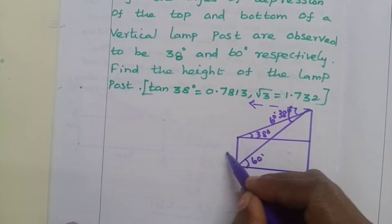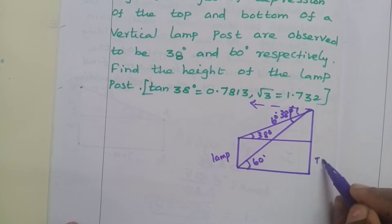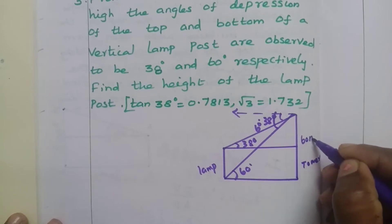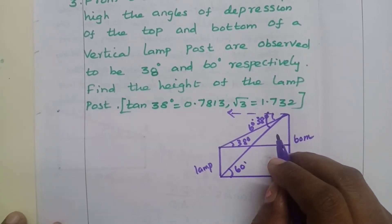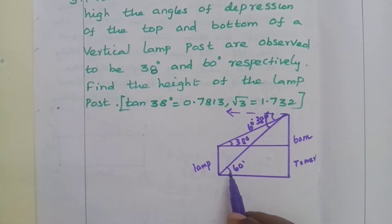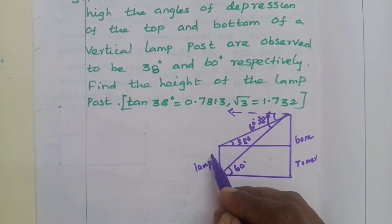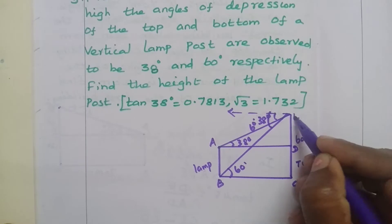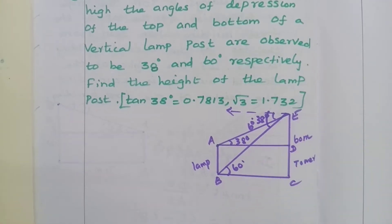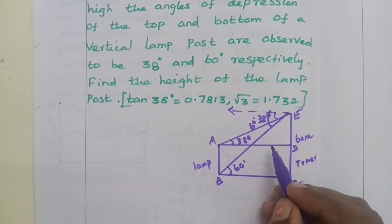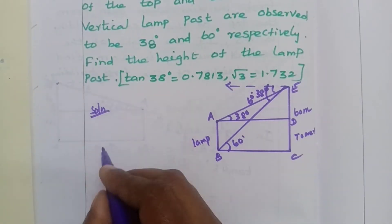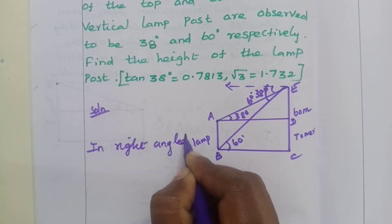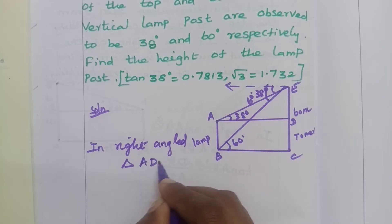So here we can see the lamp. The tower height at the top of the tower is 60 meters. We name the points A, B, C, D. In the first triangle, in right-angled triangle A, D, E.